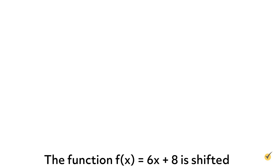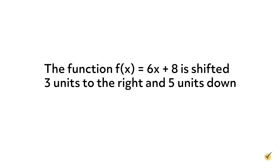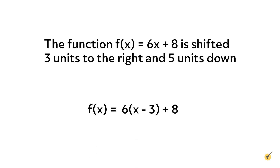Now it's your turn to practice translations. The function f(x) equals 6x plus 8 is shifted 3 units to the right and 5 units down. Write an equation to represent these changes. Since the function shifts 3 units to the right, subtract 3 from the x value in parentheses, rewriting as f(x) equals 6 times x minus 3 plus 8. Then subtract 5 from the entire function to move 5 units down. The correct equation is f(x) equals 6 times x minus 3 plus 8 minus 5.